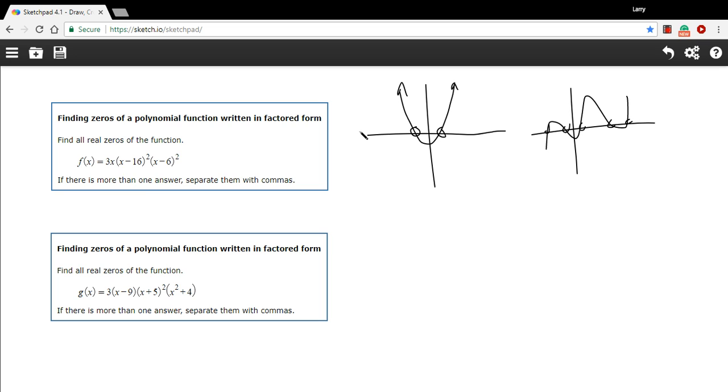So how do we find the zeros of a function? Well, typically what we do is we factor it, as I said. And then we set the thing equal to zero. And then we know that since we're multiplying all these things together, at least one of them, or maybe all of them, have to be zero. So we just set these things, these factors, individually equal to zero.